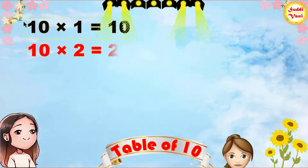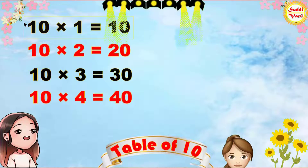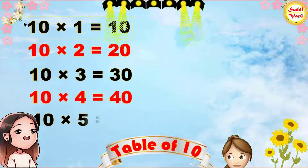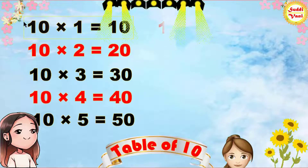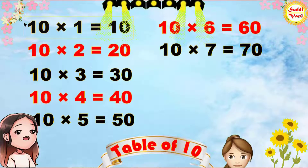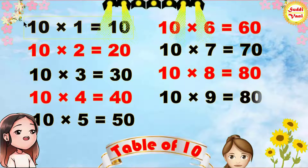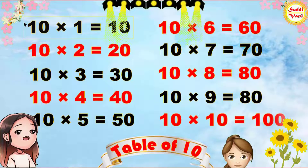10 1s are 10, 10 2s are 20, 10 3s are 30, 10 4s are 40, 10 5s are 50, 10 6s are 60, 10 7s are 70, 10 8s are 80, 10 9s are 90, 10 10s are 100.